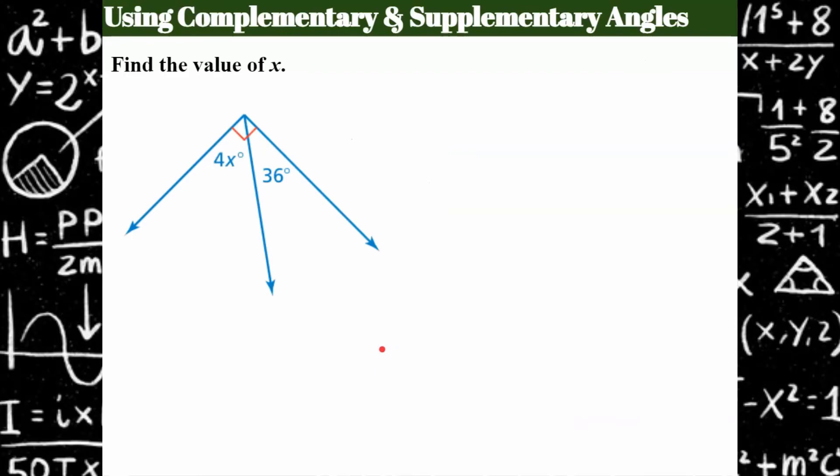Now we're going to use what we've learned about complementary and supplementary angles to find missing measures or missing values. So here, this red box tells me that these are 90 degrees, making them complementary angles. So we can write an equation that says that 4x plus the angle that's 36 together need to have a sum of 90 degrees.